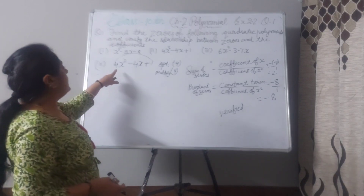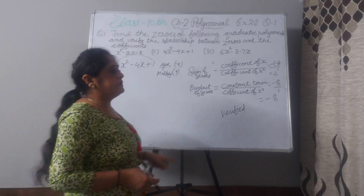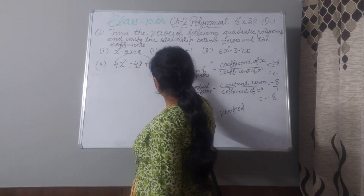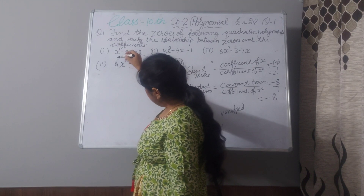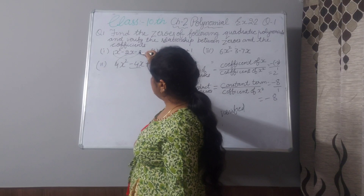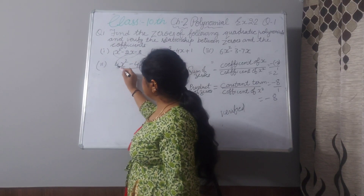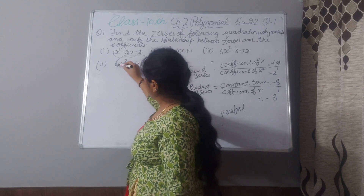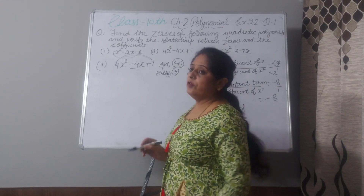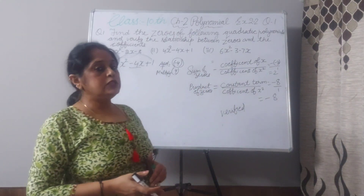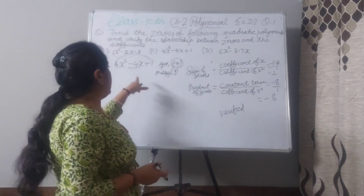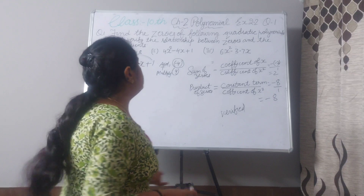Part 2: 4x² minus 4x plus 1. You have to think of two numbers. When we add them, we get minus 4, and when we multiply. Previously the coefficient of x² was 1 so we multiplied 1 by minus 8. Here the coefficient is 4, so multiply 4 by 1 to get 4. The two numbers are minus 2 and minus 2: minus 2 plus minus 2 gives minus 4, and minus 2 times minus 2 gives plus 4.